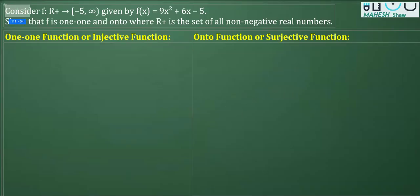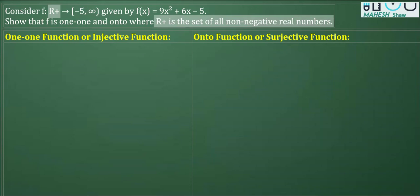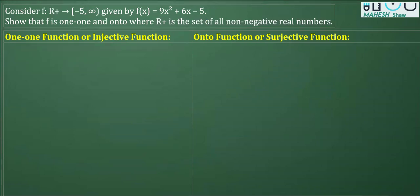We have to consider a function f from ℝ⁺, where ℝ⁺ is the set of all non-negative real numbers — that is, from zero inclusive to positive infinity. This is our domain. The range is given as minus five to positive infinity. The function is defined as 9x² + 6x - 5, and we need to show that the function is one-one and onto.